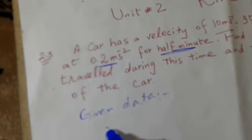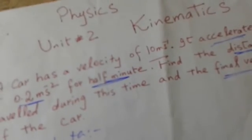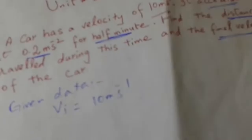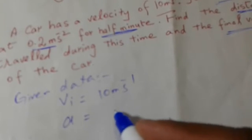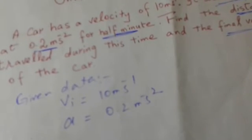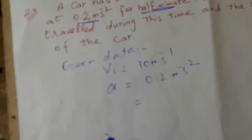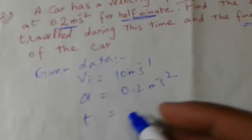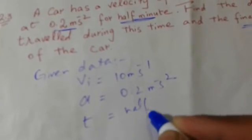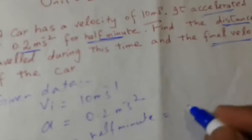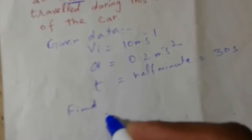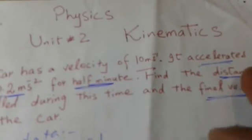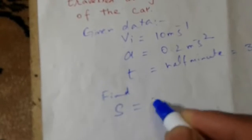The given data: initial velocity is 10 meters per second. Acceleration is 0.2 meters per second squared. Time t is half a minute, which equals 30 seconds. Now what we have to find: we have to find the distance s, and the final velocity vf.